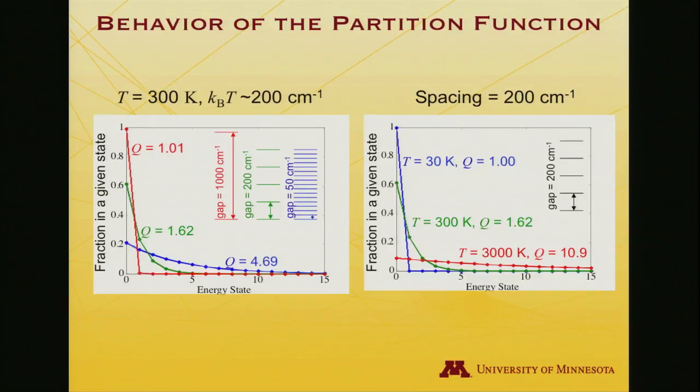So very, very close to 1, implying that really only one state is accessible, which kind of makes sense. Thermal energy is about 200 wavenumbers worth, but I got to go up 1,000 wavenumbers to get to the first state. And so plotted on the left is the fraction, that is the normalized probability, that would be found in a given state. So it's very close to 1 for the energy state 0, the ground state, and maybe it's about 1% for the first excited state, and it's just close to 0 for everything else. And you're done.